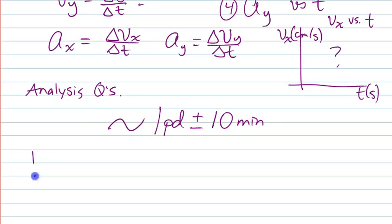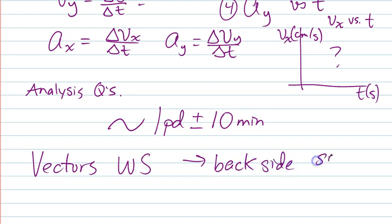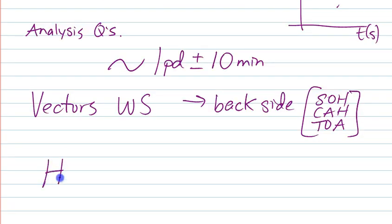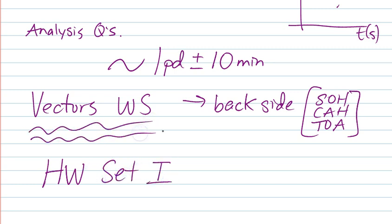At that time, you need to transition to the vectors worksheet. And we're going to be doing the back side, which has SOH CAH TOA. And so if you are completely familiar with SOH CAH TOA and right triangle trig and those sorts of things, then you can move directly to the next thing, which is to start working on homework set one. But I suggest that you do a little bit of review with vectors.